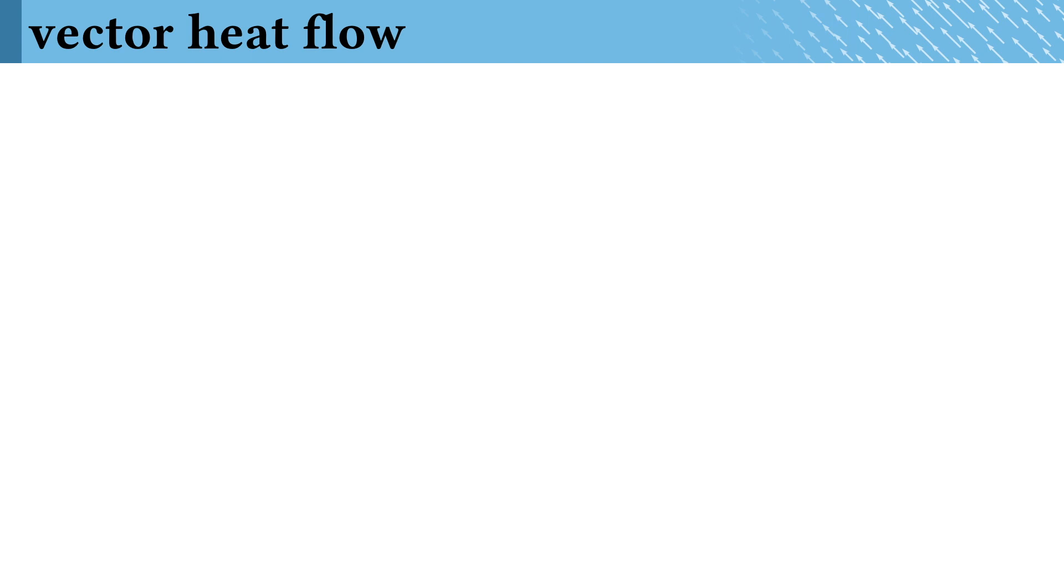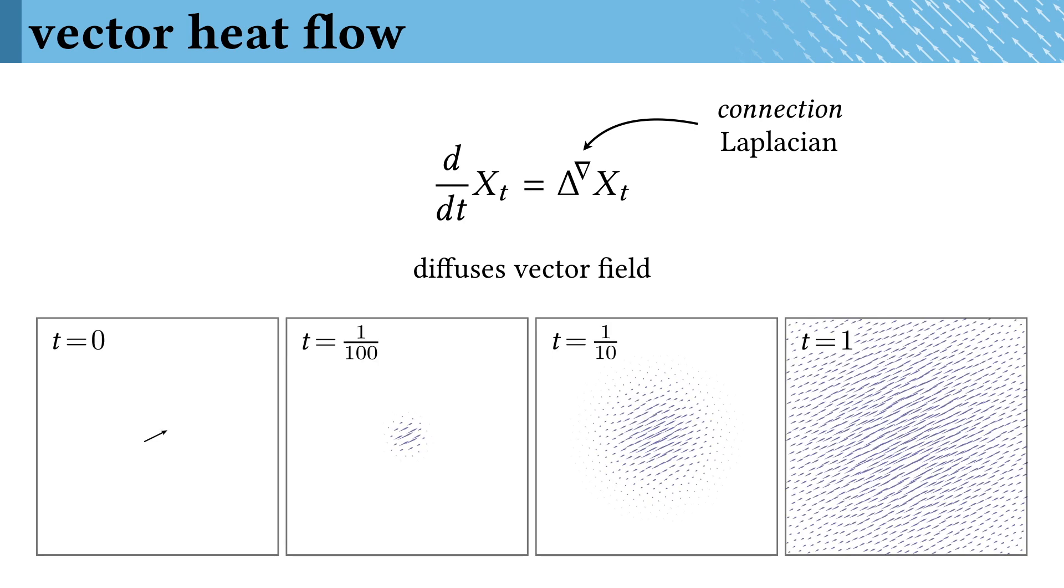So what about vectors? Well, vector diffusion works in exactly the same way, except that we need to use this connection Laplacian, which is just like a Laplacian except it knows how to keep vectors parallel as they diffuse. As we see on the bottom, an initial vector source gets smeared out over time by the action of this diffusion.